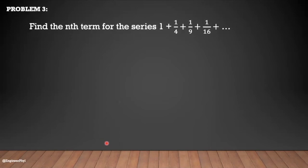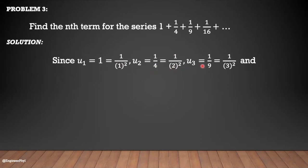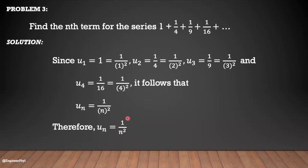Example number 3: Find the nth term for the series 1 + 1/4 + 1/9 + 1/16 + … Observing the first four terms: u₁ = 1 = 1/1², u₂ = 1/4 = 1/2², u₃ = 1/9 = 1/3², u₄ = 1/16 = 1/4². It follows that our nth term is u_n = 1/n².